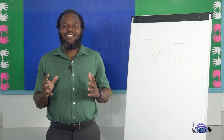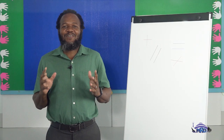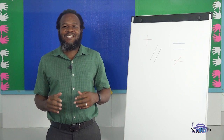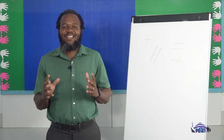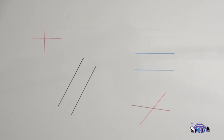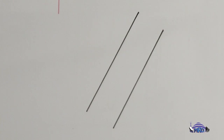From the set of lines drawn on the board, identify the lines which are parallel to each other. If you selected the blue lines and the black lines, then you are absolutely correct.